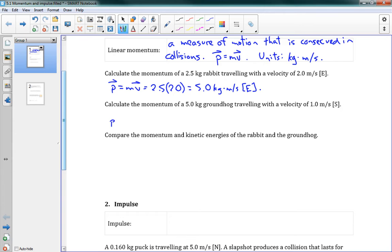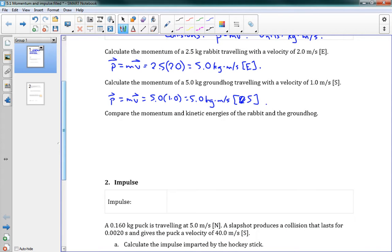And we'll do that again for the next guy here. This is a groundhog, so he's heavier, but he's moving slower. Mass times velocity, we have 5 kg now, times 1.0 meter per second, gives us again 5.0 kg meter per second. Oh, in this case actually he's going south, my mistake. So you can see they have the same momentum, different directions, but they have the same momentum even though they have different weights.